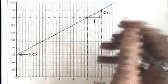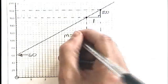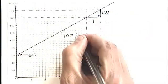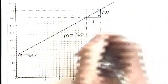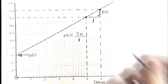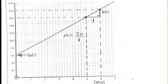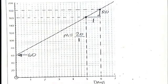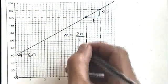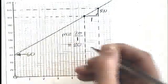So to find the gradient, we need to do how far up, which is 20, divided by how far across, which is 1. It's really important you use the scales. If you were going to do 4 divided by 5 there, you would get the wrong gradient. So don't count squares. You've got to really look at the scales. So the gradient here, 20 divided by 1, is 20.